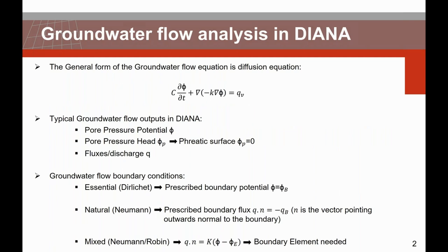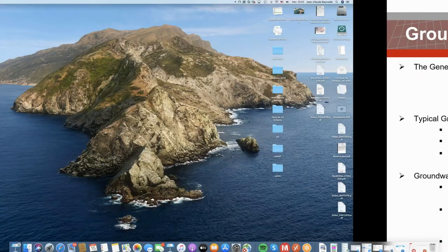The general form of the groundwater flow equation is basically a diffusion equation where C is storativity, K is hydraulic conductivity, and Q is a source or sink. In case of a steady state analysis this equation simplifies since we do not consider time dependency, but in the transient situation we will consider it. Typical groundwater flow outputs in Diana are the pore pressure potential phi, the pore pressure head phi_p, and the flux.